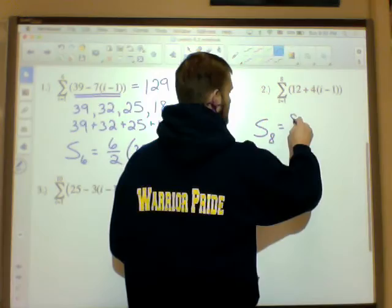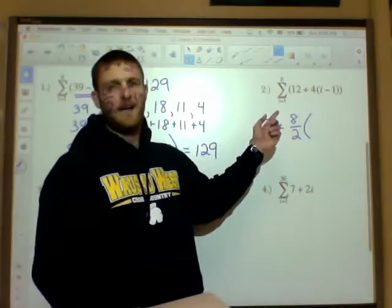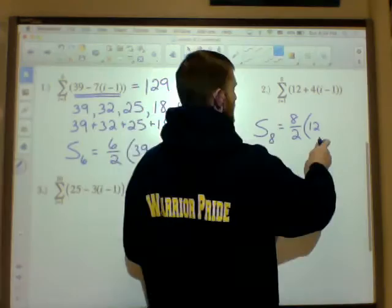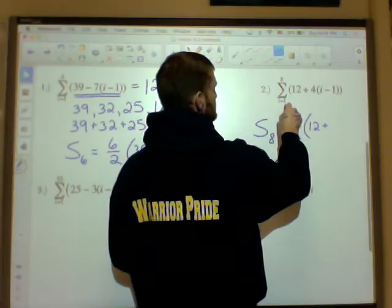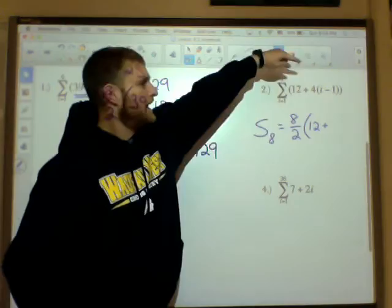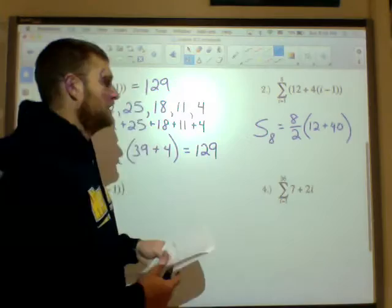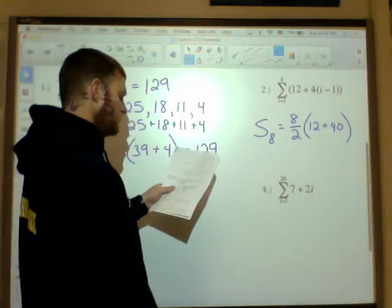So I'm going to take my 8 divided by 2, and I'm going to find the first term. So I use my rule up here, and I know that since this is written in explicit formula form, 12 is going to be my first term. If you want to plug 1 in there for i, that's fine. You're still going to get 12. Now, my last term, so I go ahead and I plug 8. I start by substituting 1. You're like, why am I using 8? Because it's telling me up here that's my upper bound. I use 8, and I get 12 plus 4 times 8 minus 1, which is 12 plus 4 times 7, which is 12 plus 28, which is 40. So I'm going to find out that I have a sum here when it's all said and done of 4 times 52, which is 208.